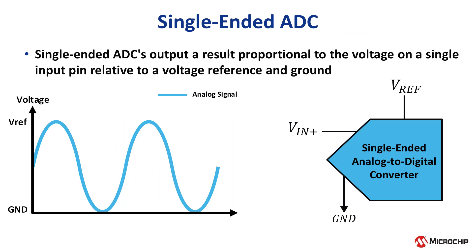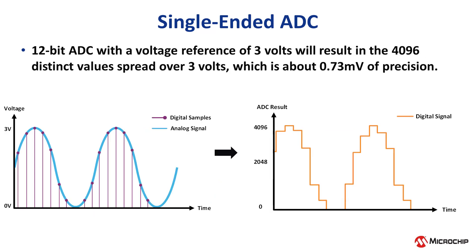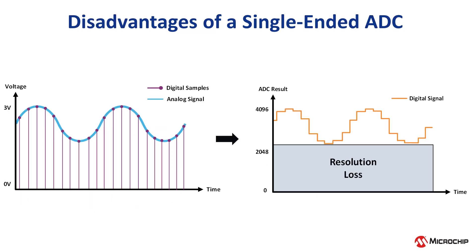In a single-ended ADC, the signal voltage is measured with respect to ground and a voltage reference. For a 12-bit ADC with a voltage reference of 3 volts, there are 4096 — or 2 to the power of 12 — distinct values spread over the 3 volts. Dividing 3 by 4096 shows each bit has approximately 0.73 millivolts of precision. In general, if the desired signal stays within a small voltage range, a single-ended ADC's wide measurement range is wasted because the output signal is constrained to specific values. Therefore, the ADC will have lower effective resolution.